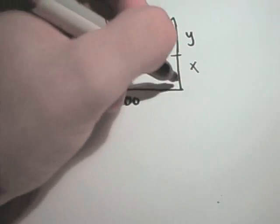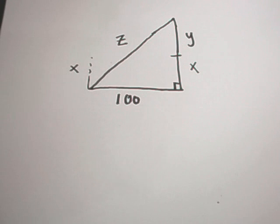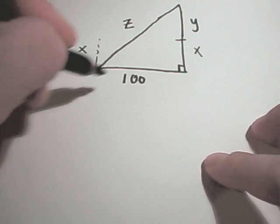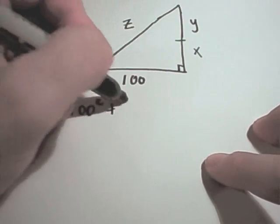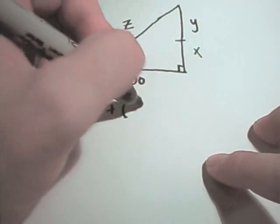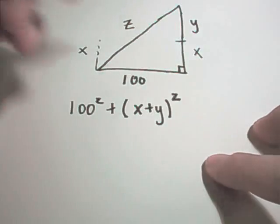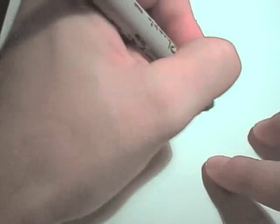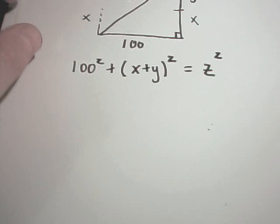And now I have a right triangle. So my equation that's going to relate these two variables, these three variables, rather, is going to be Pythagorean theorem. So it says 100 squared plus, okay, well now if I add the length of the other side of the triangle, which is X plus Y squared, that has to equal Z squared. And this is where I do my implicit differentiation.